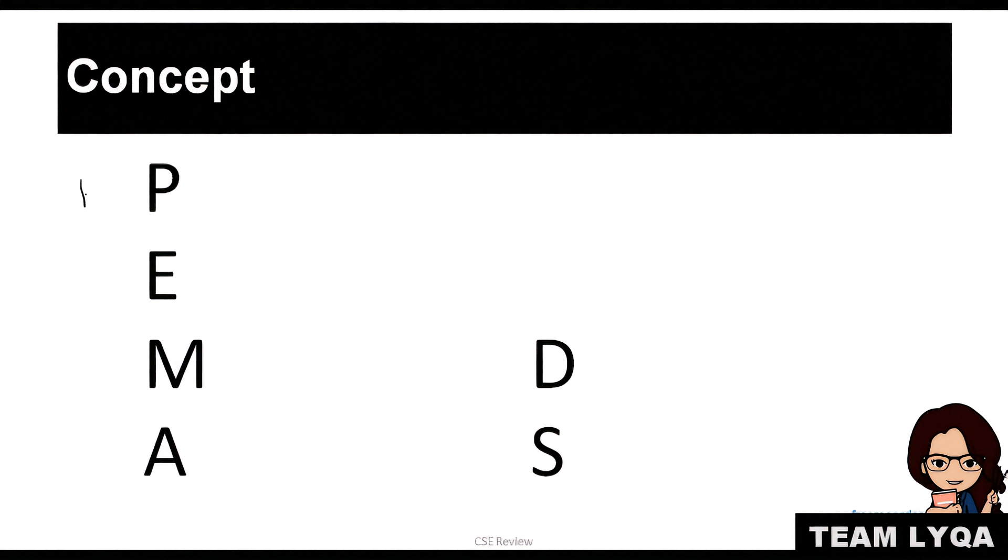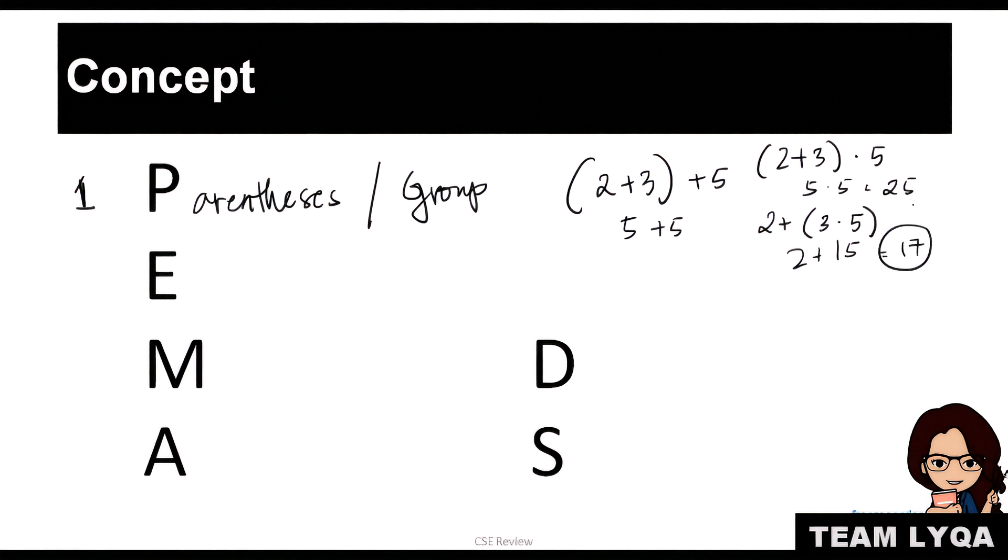The order goes like this. Ang una ninyong isosolve ay if merong parenthesis. May parenthesis or group. Ibig sabihin kung merong ganitong itsura, 2 plus 3 plus 5, uunahin ninyo yung 2 plus 3 bago may add ng 5. So, you have 5 plus 5. It's very important kasi kung magkaiba na operations, nag-iiba ang sagot. For example, 2 plus 3 times 5 would be 5 times 5 or 25. Pero kung inilipat natin yung parenthesis at gagawin natin yung 2 plus 3 times 5, this would be 15, kasi unahin may nasa loob ng parenthesis, plus 2, this would only be 17.